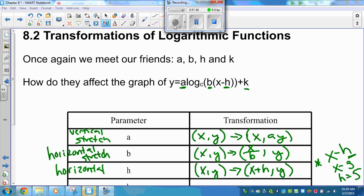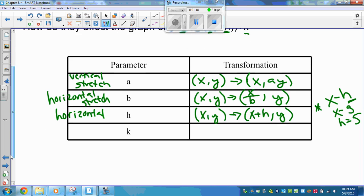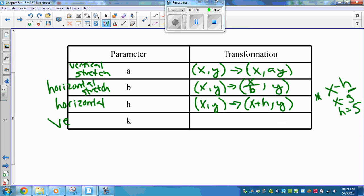And of course, K is a vertical shift. We should write shift for translation. Vertical. So when you do something vertically, you take the point, and you're going up vertical. So you're affecting its Y value.